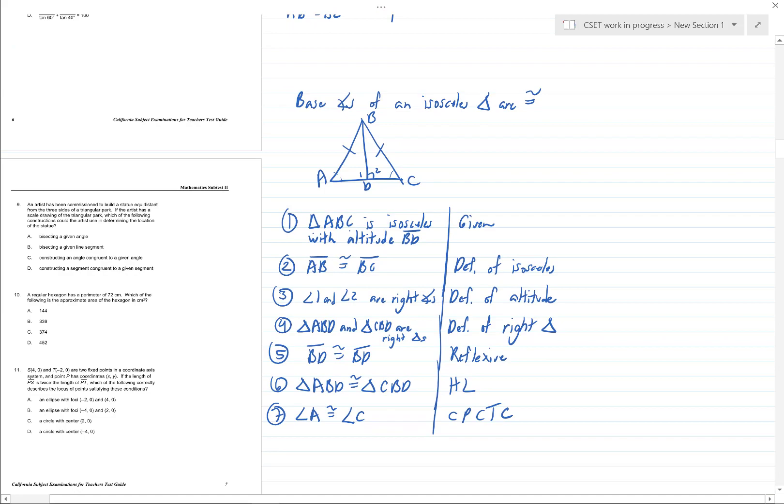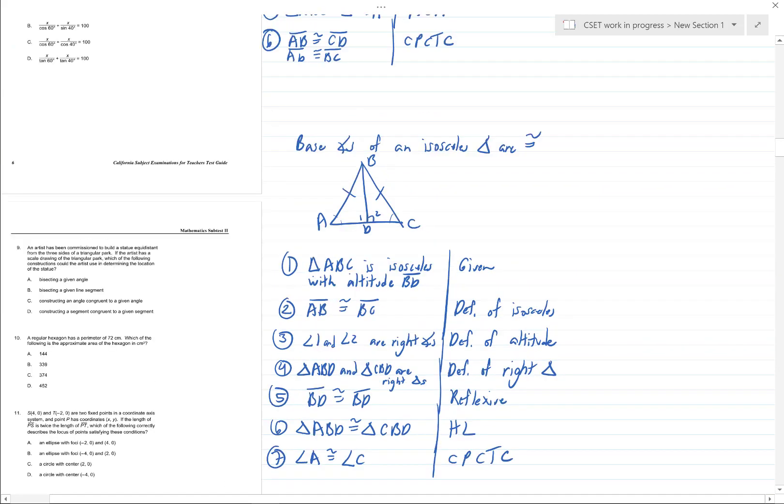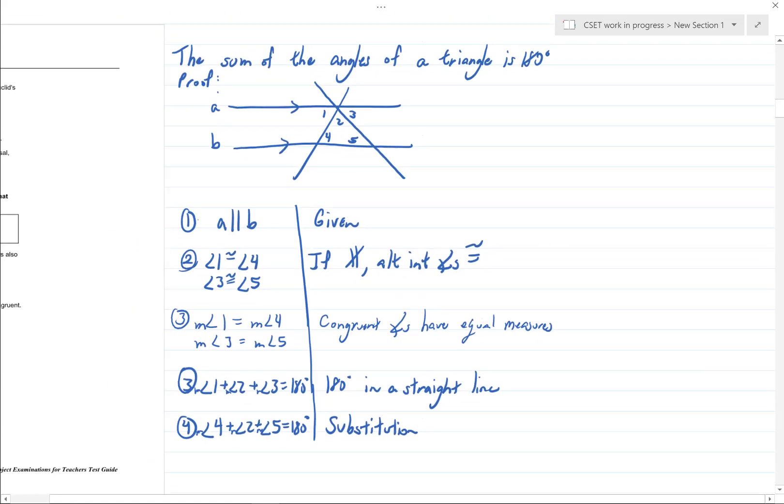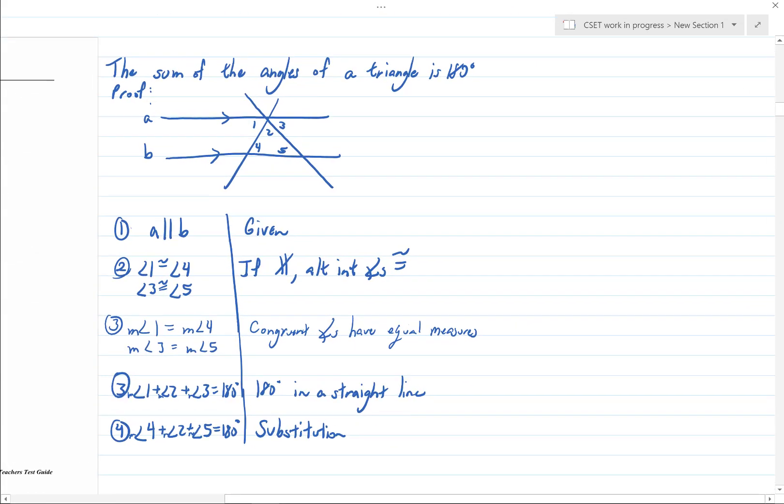And then the one proof that we did need parallel lines for was to prove that the sum of the angles of a triangle are 180 degrees. This one's kind of neat: you know that 1 and 2 and 3 must all add up to 180 because there are 180 degrees in a straight line, this is known. And then you would need Euclid's postulate to say that the alternate interior angles are congruent.